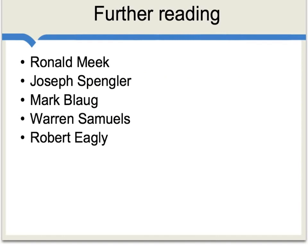For further reading, you can of course Google Quesnay and Physiocrats and Tableau Économique, and there's plenty on the web. But if you'd like to read some historians of thought on the Physiocrats, the ones I recommend for a start are this list here: Ronald Meek, Joseph Spengler, Mark Blaug, Warren Samuels, and Robert Eagly. You can find their works online. Some of these are gated through JSTOR. But nonetheless, to really dig into the Physiocrats, outside commentary is extremely useful, and those are some of the writers who have done a lot of good work making Quesnay and the Physiocrats more intelligible.